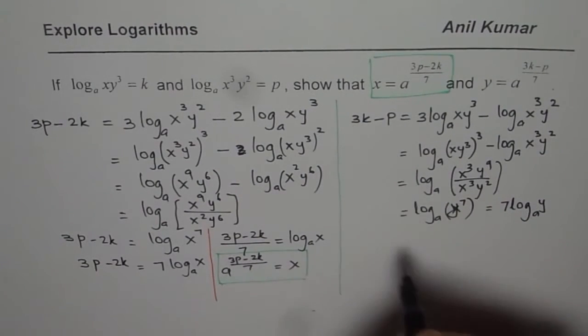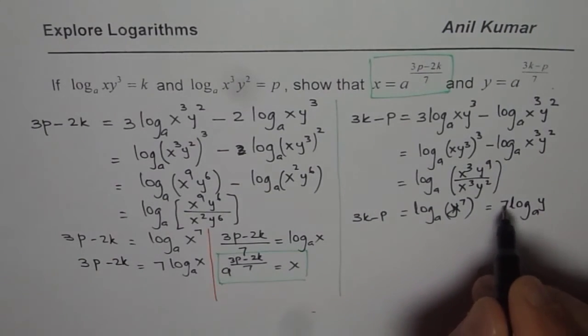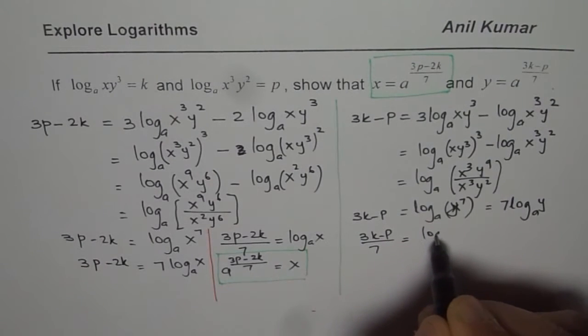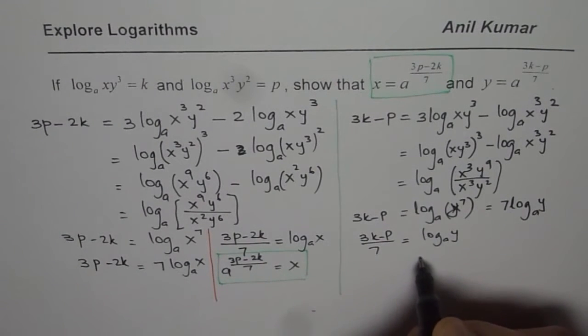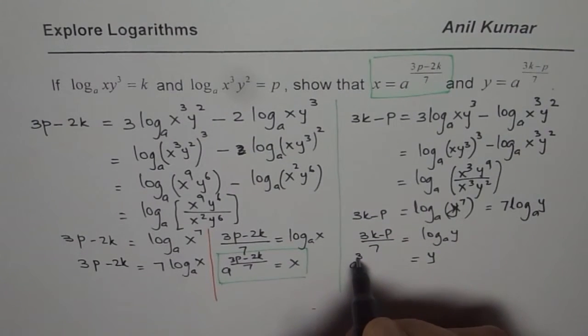And this is equal to 3k, so this is all equal to 3k - p. Let me divide this by 7: (3k - p)/7 is equal to log to the base A of y, and so y is equal to a to the power of (3k - p)/7. Do you see that?